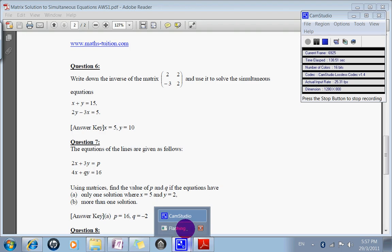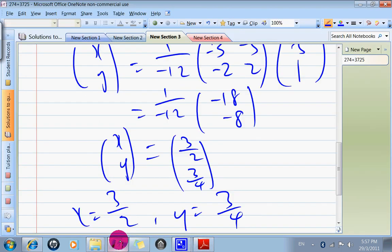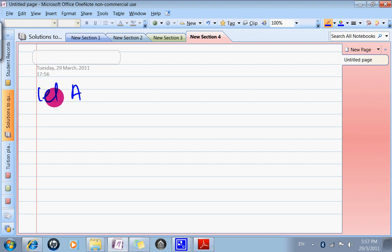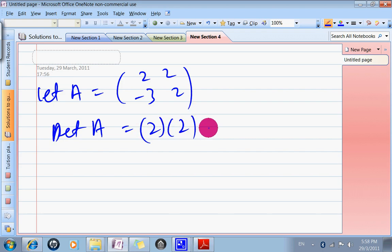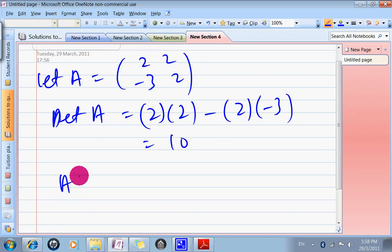I'm going to write it down. Let A equals to 2, 2, negative 3, 2. So determinant of A equals to 2 times 2 minus 2 times negative 3 giving me 10. So A inverse therefore is 1 over 10. Switch the number around to 2, switch around, add negative to these two numbers. So negative 2, 3. So this is the A inverse.